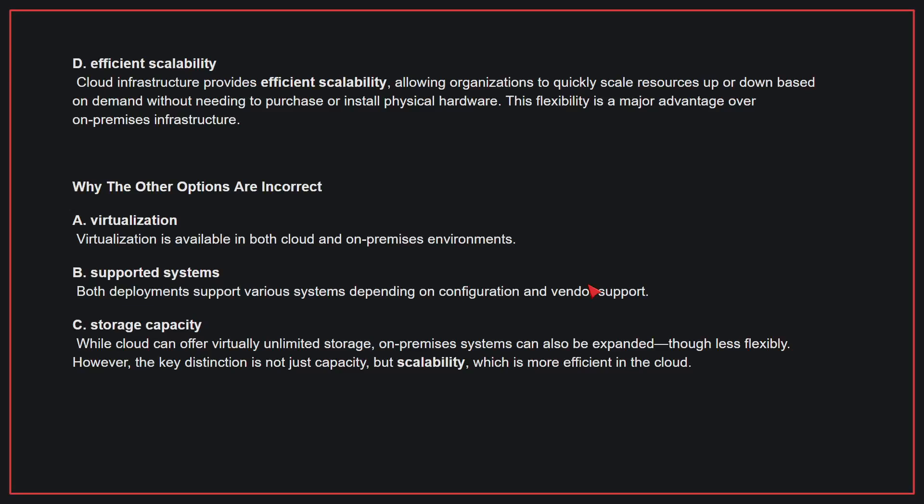Why the other options are incorrect? A: Virtualization is available in both cloud and on-premises environments. B: Both deployments support various systems depending on configuration and vendor support. C: While cloud can offer virtually unlimited storage, on-premises systems can also be expanded, though less flexibly. The key distinction is not just capacity, but scalability, which is more efficient in the cloud. Therefore, the correct answer is D.